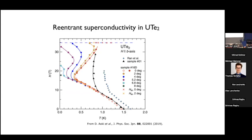If you look at the experimental data — the beautiful data of Ioki Sun — at low fields there's a superconducting phase which is destroyed in a magnetic field, and then as you increase the magnetic field it re-enters. Two things to note: this is an orthorhombic crystal with the field along the b-axis, and you can tilt off the b-axis. At low fields the upper critical field is roughly angle-independent, but at higher fields it's strongly dependent on angle.